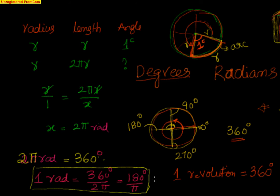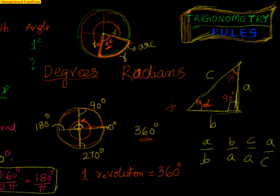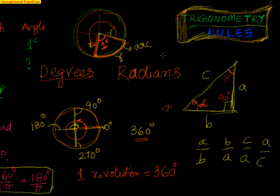This relationship is very extensively used. For example, if somebody gives you sine π/4, immediately you will say you are talking about sine 45 degrees, because π is 180. So π/4 into 180/π: the π's cancel, and 180/4 gives 45. That is how you convert.